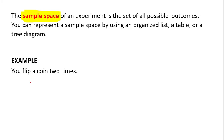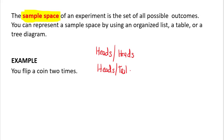So when you flip a coin two times, you can get: heads and then heads the second time, or the first time heads and the second time tails, and then tails and heads, and then tails and tails. This is an example of an organized list.